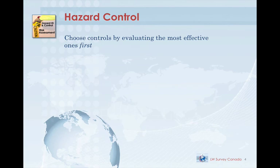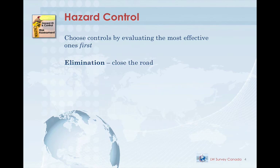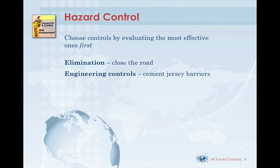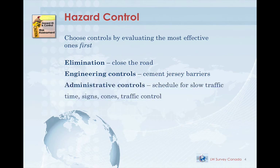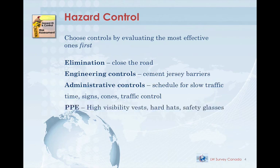We start by assessing the most effective hazard controls and work our way down the list. Using roadside work as an example with the hazard of a vehicle striking a worker: we can eliminate the hazard by closing the road entirely to all traffic. We can use engineering controls such as cement jersey barriers to physically protect you from the vehicles. Or we can use administrative controls like scheduling the work for slow traffic times and using signs, cones, and traffic control flaggers. We'll also specify personal protective equipment such as high-vis vests, hard hats, and safety glasses with side shields — but PPE is always used in addition to our hazard controls.